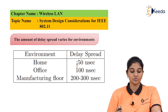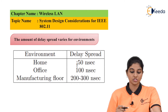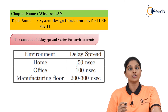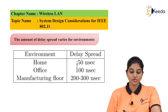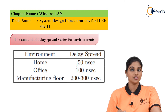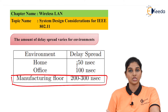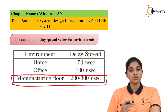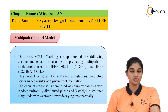Delay spread occurs primarily in indoor wireless LAN environments. In a home environment, the delay spread is 50 nanoseconds; in an office environment, it is 100 nanoseconds; and in a manufacturing floor environment, it is between 200 to 300 nanoseconds. Since the manufacturing floor delay spread is greater than 100 nanoseconds, an equalizer is required as an alternative for correcting the delay.